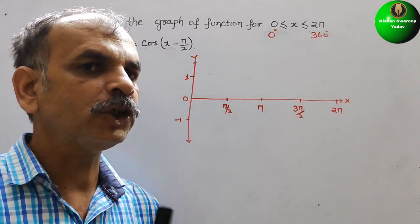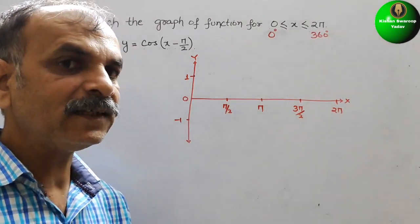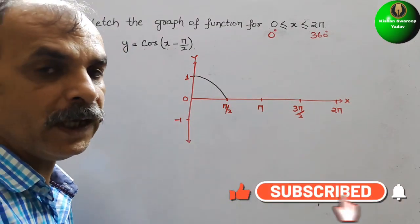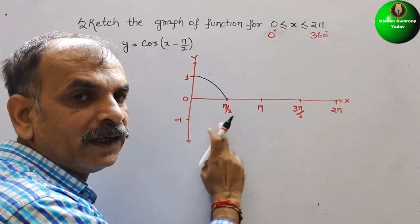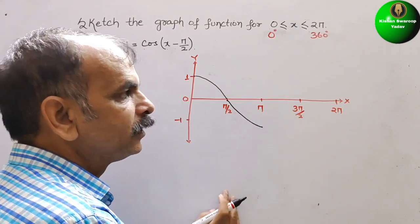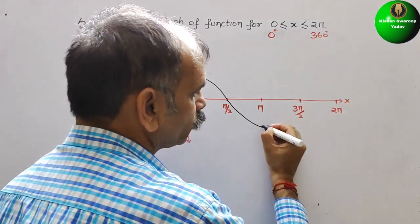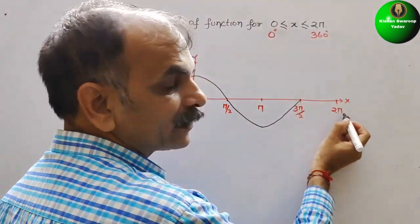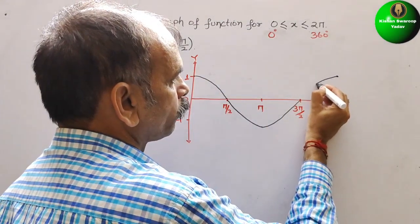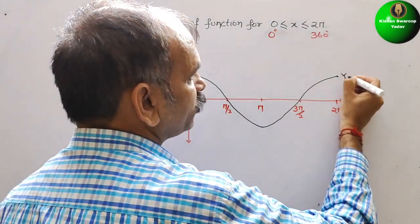We know that cos(0) is 1, so the graph starts at 1. Next, cos(90°) is 0, so it comes down to 0. Then cos(180°) is minus 1, so it goes down to minus 1. Next, cos(270°) is again 0, so it comes back to 0. And at 360 degrees it returns to 1. So your cos graph looks like this — this is y equals cos x.